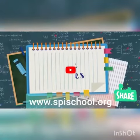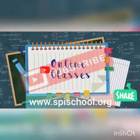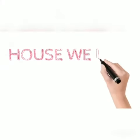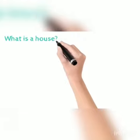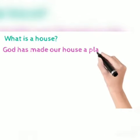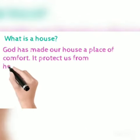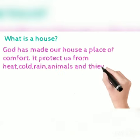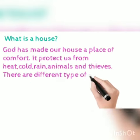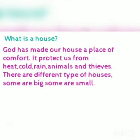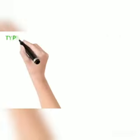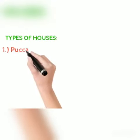Today's topic is houses. God has made our houses a place of comfort — they protect us from rain, heat, cold, animals, and thieves. There are different types of houses: some are big and some are small. Let us discuss the types of houses.